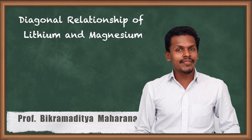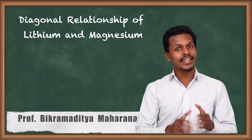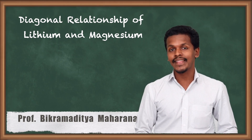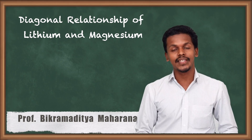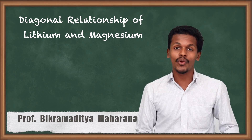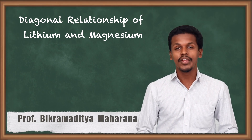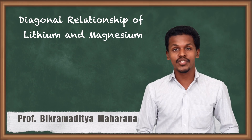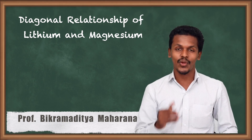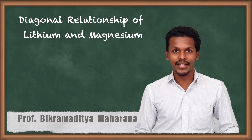Hello friends. In the previous lecture we got to know the anomalous behavior of lithium compared to the other elements belonging to the same group. That has led us to understand that since lithium is different from its own group, it would be similar to elements in another group. So we are going to discuss how lithium and magnesium, which belongs to group 2, have similar properties — that is the diagonal relationship between lithium and magnesium.